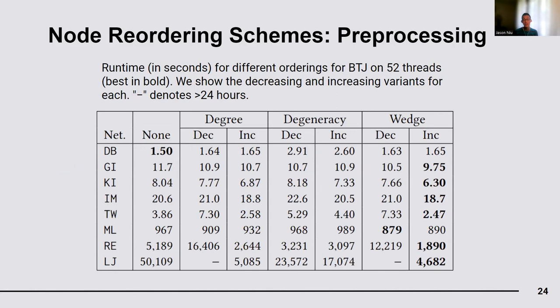For our node reordering step, we tested the impact of different node ranking choices. Degree ordering ranks the nodes based on their degrees. Degeneracy ordering is an ordering of vertices given by repeatedly finding and removing vertices of smallest degree, also known as ordering by core numbers. Wedge ordering uses the number of two-paths from each node. Comparing individual ordering schemes, increasing wedge ordering outperforms the other ordering schemes in six of eight networks, including the two largest networks, Reuters and LiveJournal. This is why we consider it as the default ordering in preprocessing.